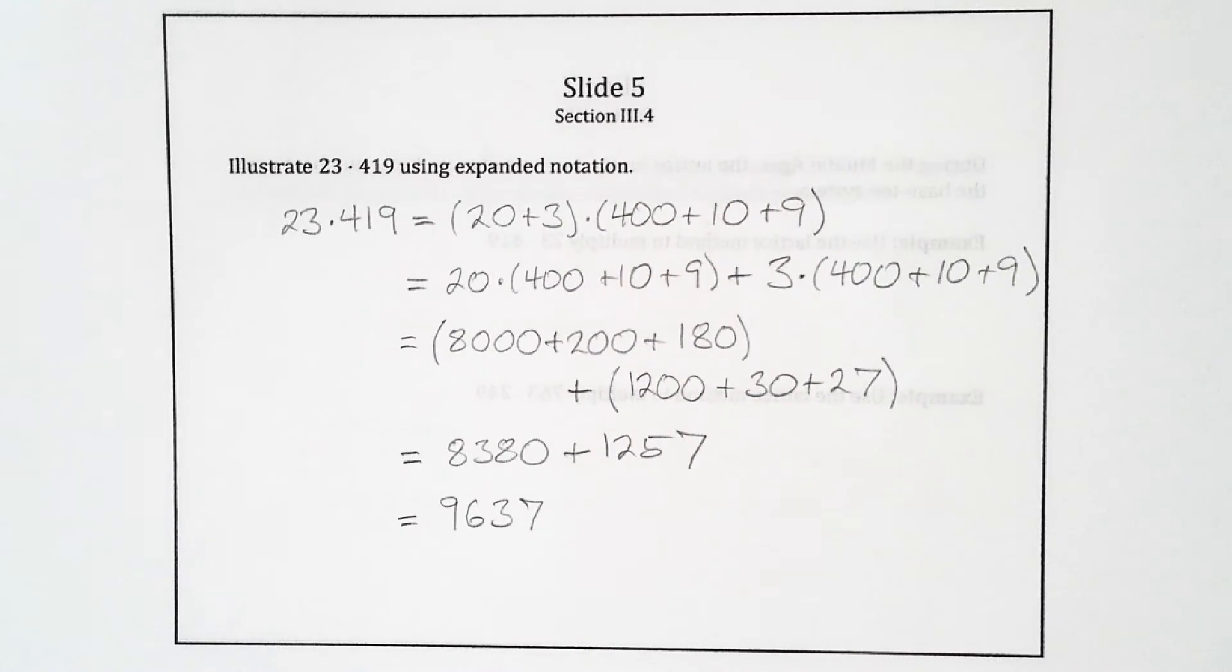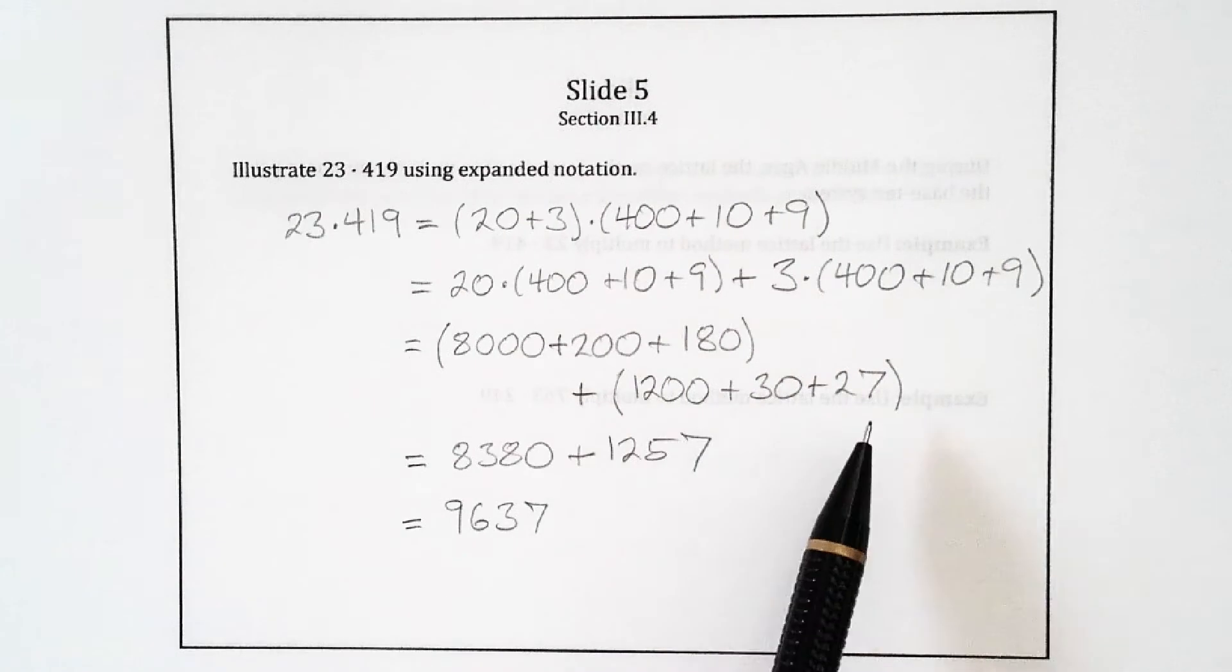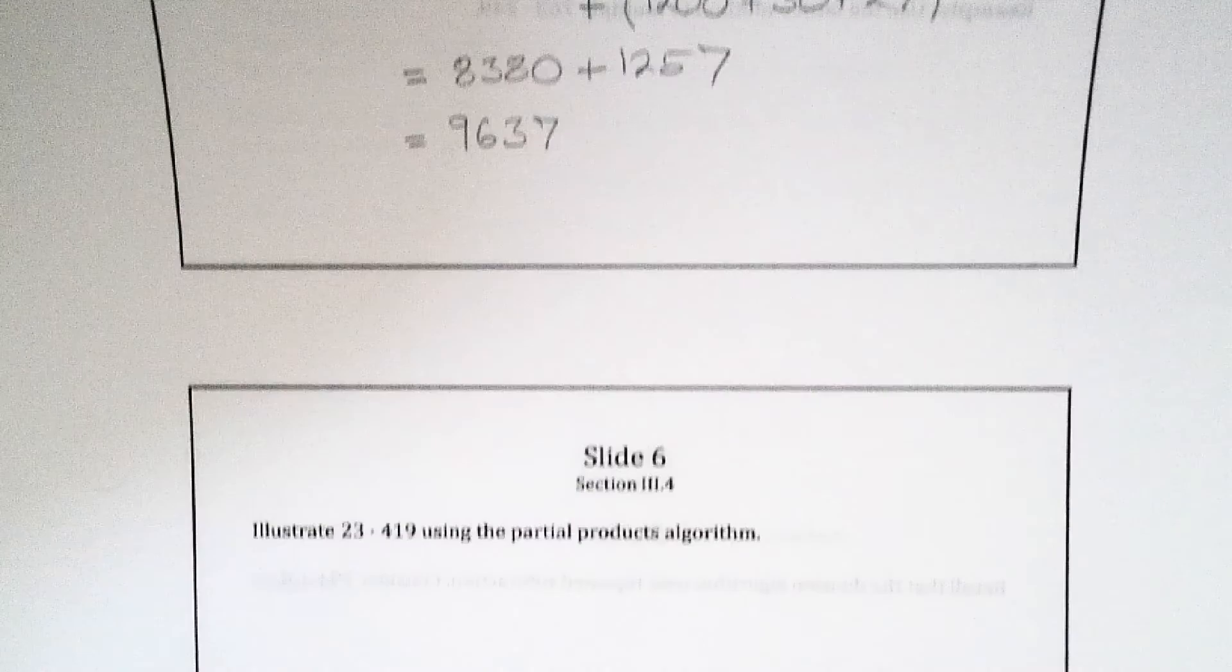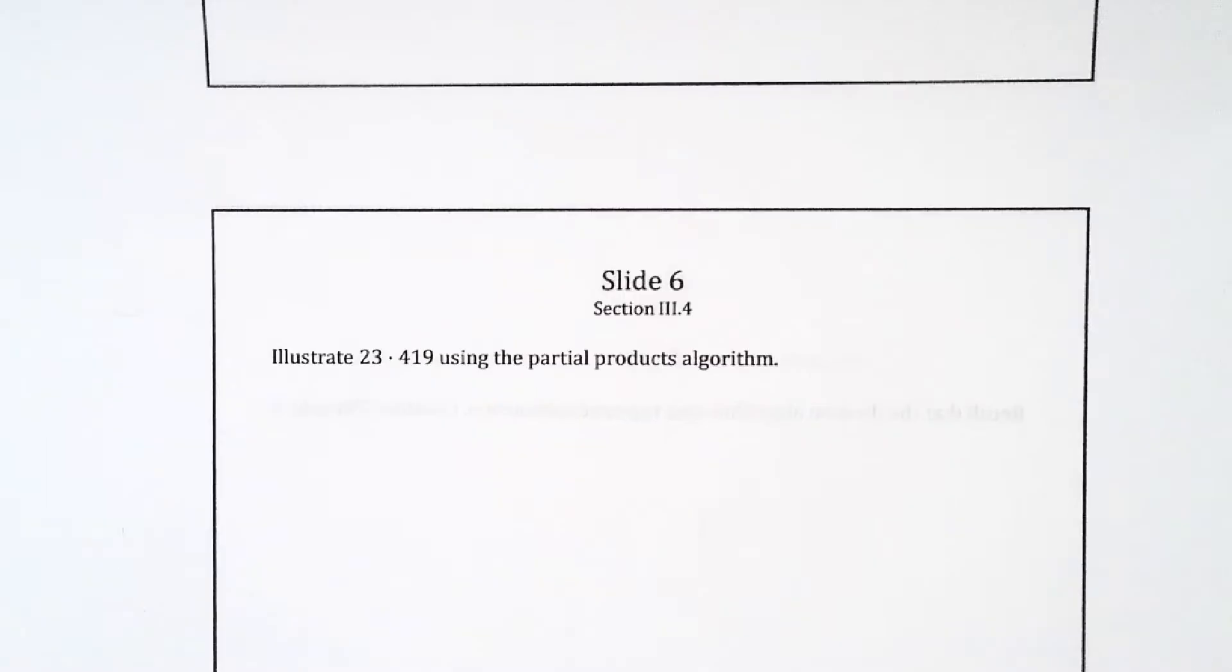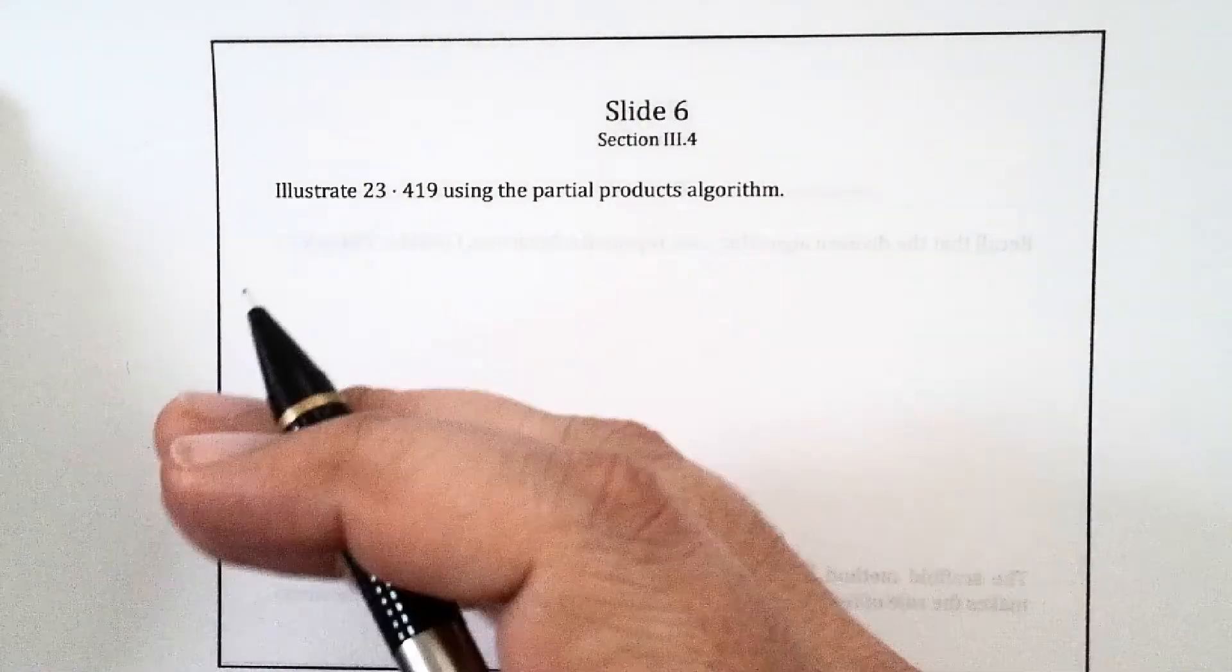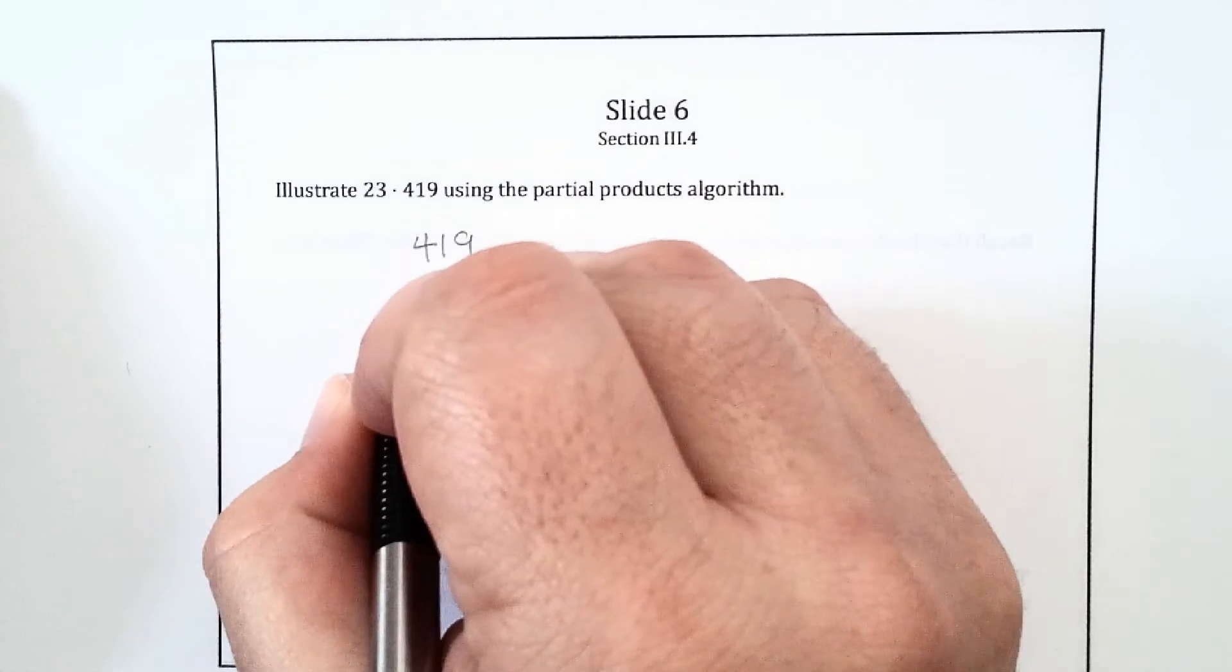The drawback of doing it this way is that when you get to the point of adding the numbers, it's not really very convenient to do that because they're arranged horizontally. So it's more convenient to write them vertically as we know, and that's what's accomplished in the partial products algorithm. This does the same work, but it lines things up vertically. We have 419 times 23.